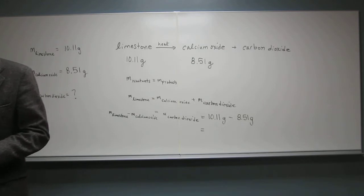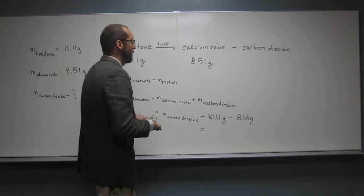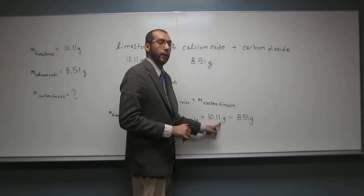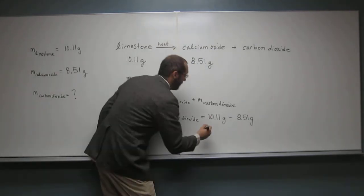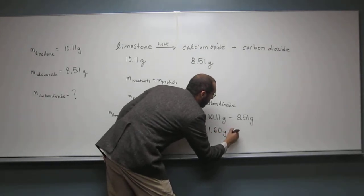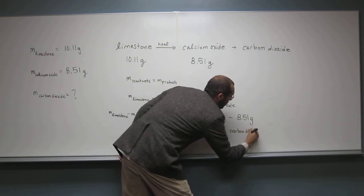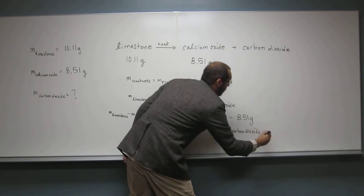Okay. So now get out your calculators, because you need to use your calculator for this, unless you can do that in your head, which you might be able to do. 10.11 minus 8.51, and it's 1.60, because there's two places after the decimal. 1.60 grams of carbon dioxide was formed.